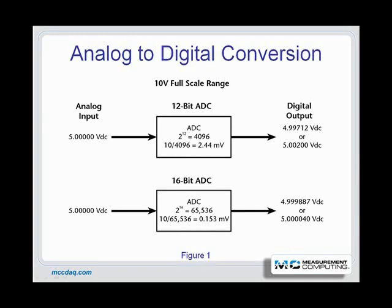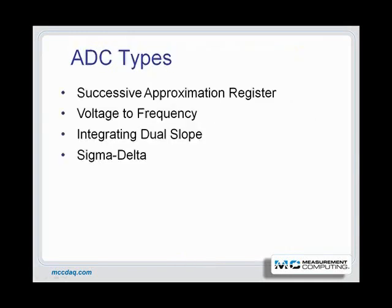Each bin is labeled for a single digital output code and contains a count of its occurrence — the number of times that code showed up in the output. When N represents the ADC's bit resolution, 2 to the N bins are required. The width of each code bin should be FSR divided by 2 to the N, where FSR is the full scale range of the ADC.